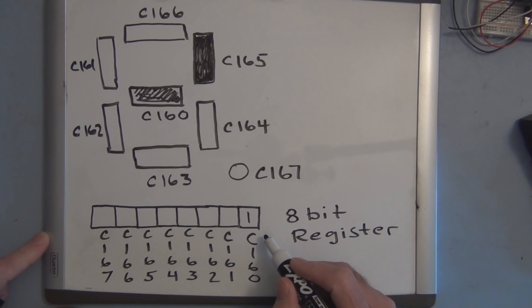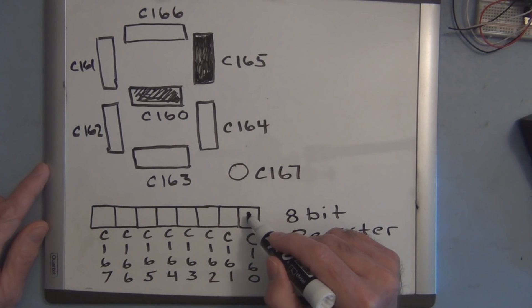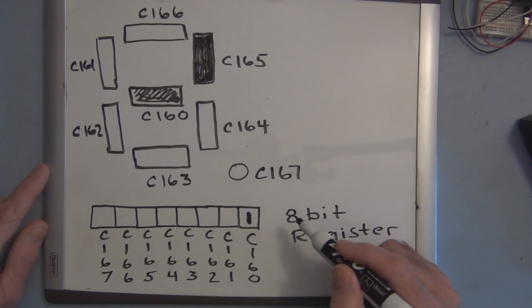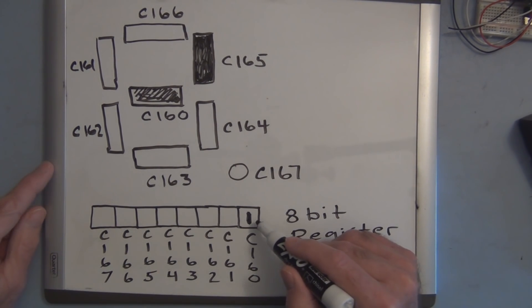Now you've got a block of memory. Each one of these eight-segment displays has a different block of memory, and this one goes from C160 all the way up to C167. So if you load a one into that specific memory location, that will turn on that segment associated with that.